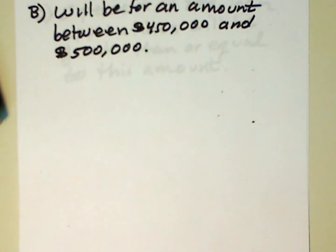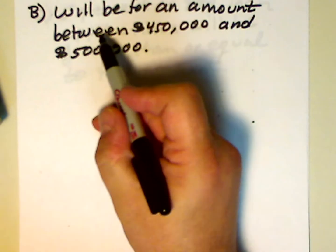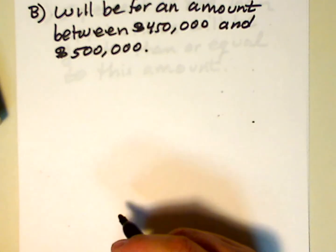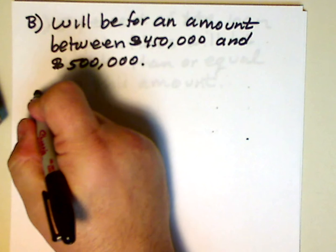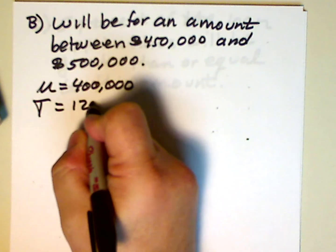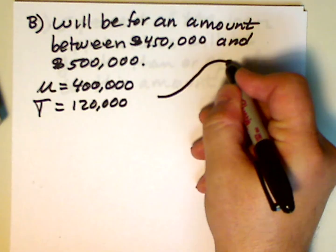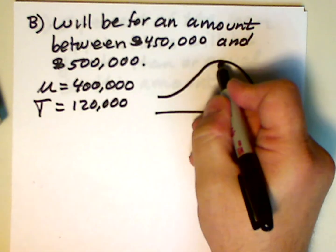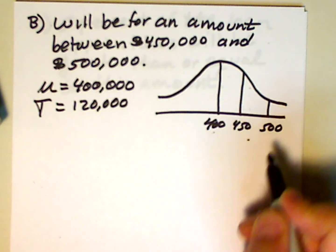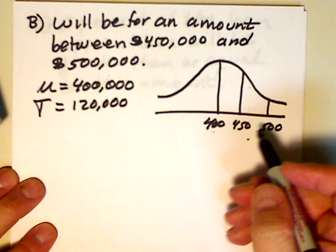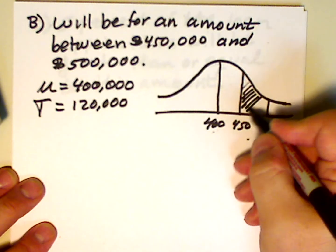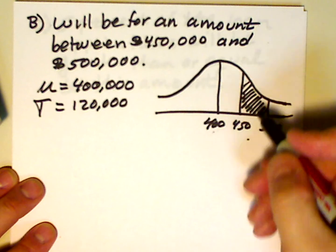Okay, let's look at part B in this problem. What's the probability that the loan will be for an amount between 450,000 and 500,000? So again, we want to write out μ = 400,000, σ = 120,000. We're going to draw another picture. And we're going to put in 400,000 here, 450,000, 500,000. And I wouldn't worry about how pretty your picture is, and I wouldn't worry about proportions. Just get it in there. And this is the area in which we're interested. And that's really the important part is shading in the correct area.